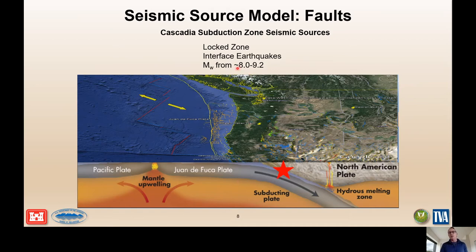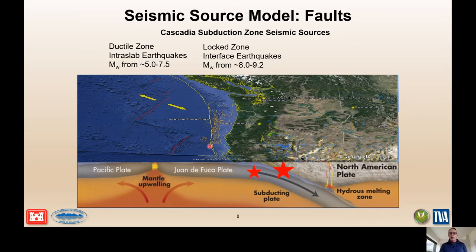Those earthquakes are generally large because the lengths and widths of the subduction zone are great, and the magnitudes are in the eights and nines. The return period is on the order of a couple hundred years. Other earthquakes can occur in the Cascadia subduction zone — intraslab earthquakes that occur within the Juan de Fuca plate going underneath North America. As that slab gets subducted, it gets cracked up, and an earthquake can occur. These generally range in the 5 to 7.5 magnitude range.